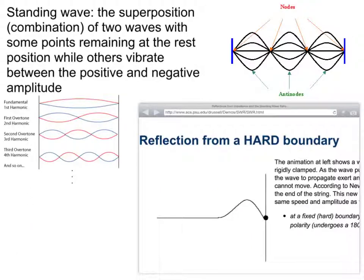Standing waves is the superposition — or the combination — of two waves, with some points remaining at rest and others vibrating between positive and negative amplitude. What's actually happening with a standing wave is a wave moves towards a barrier and then is reflected back. The reflected wave has a phase shift of pi, or 180 degrees.